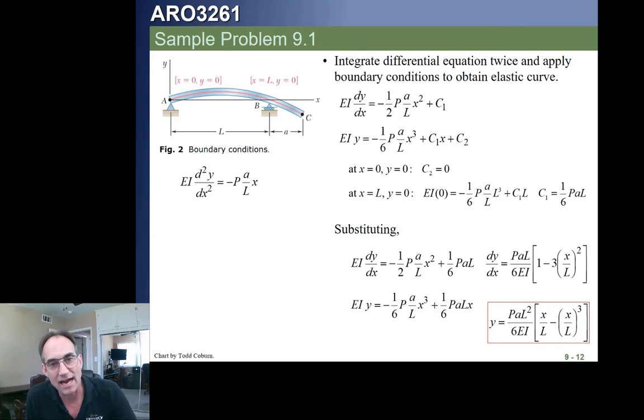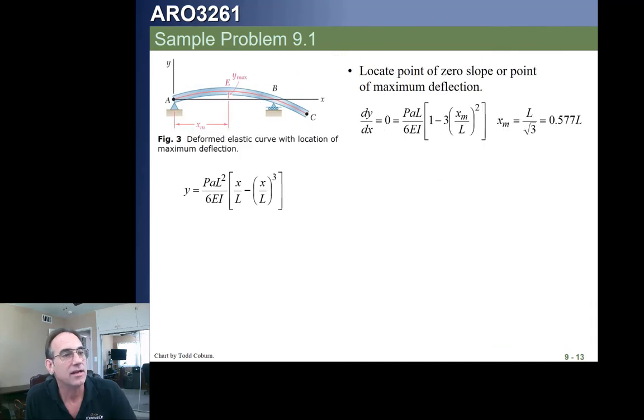This is Y of X. Now that we have that, we then can go figure out, set the derivative of that equal to 0. Once again, we already know what that is. If you just take that slope equation we already calculated, then that's what we need. Set that equal to 0.